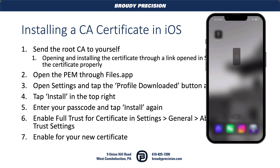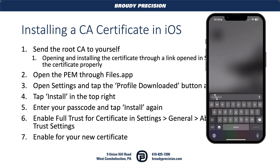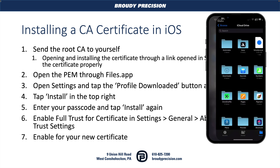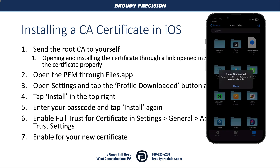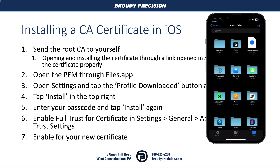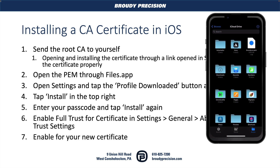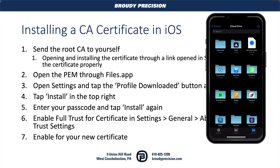Now I'm going to close out of Dropbox and open up the Files app. We can see that PEM file is in there now. If I tap it, it's going to say it downloaded the profile and I need to review it in the Settings app. So that brings us to step three. What you'll see in this process is there are a whole bunch of extra steps to confirm that you're doing something you actually mean to do.